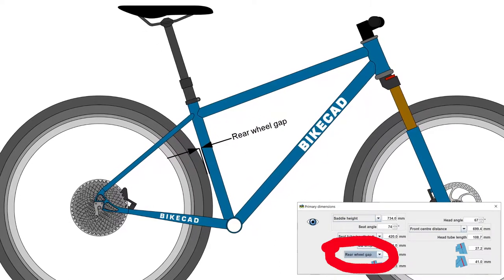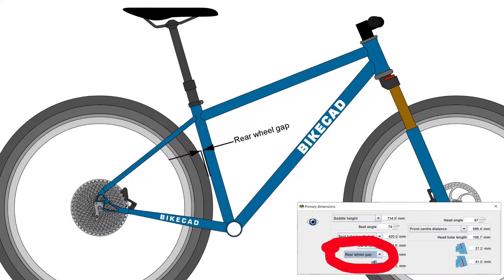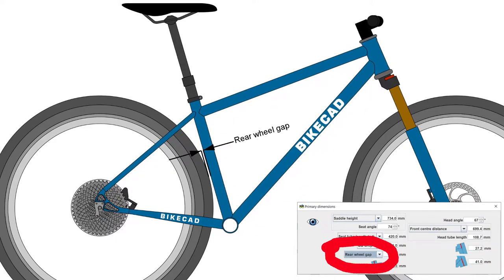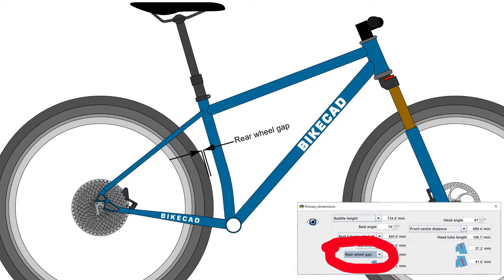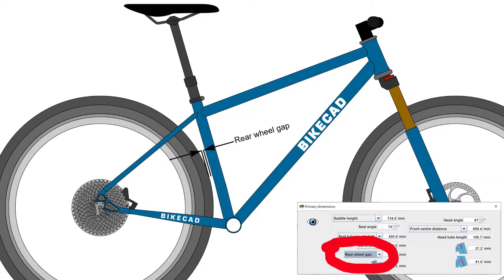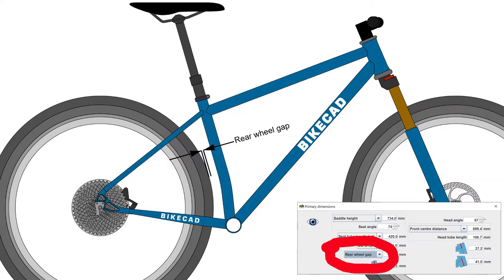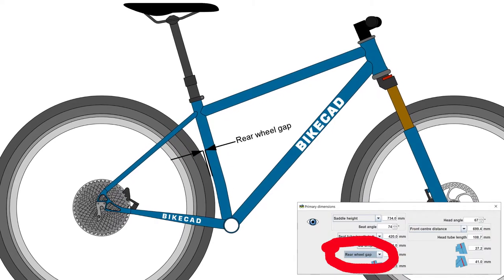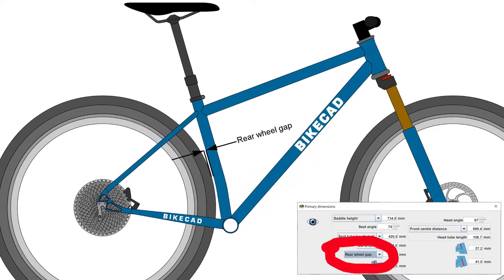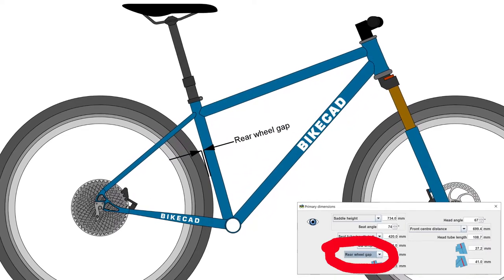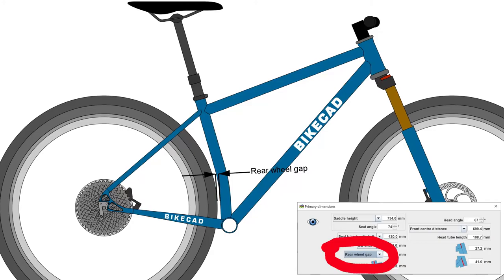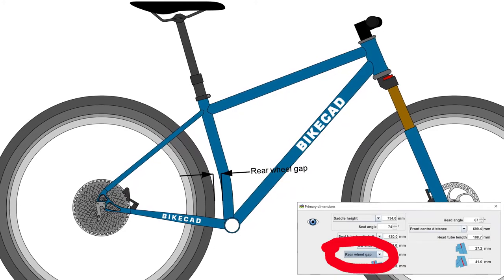This has been an option in BiCAD for a long time. However, one deficiency was that it would not take into account bent seat tubes. In BiCAD version 16, this issue has been resolved. BiCAD will correctly set the chainstay length to maintain the minimum specified gap between the rear wheel and the nearest point along the back edge of the bent seat tube and bottom bracket shell.